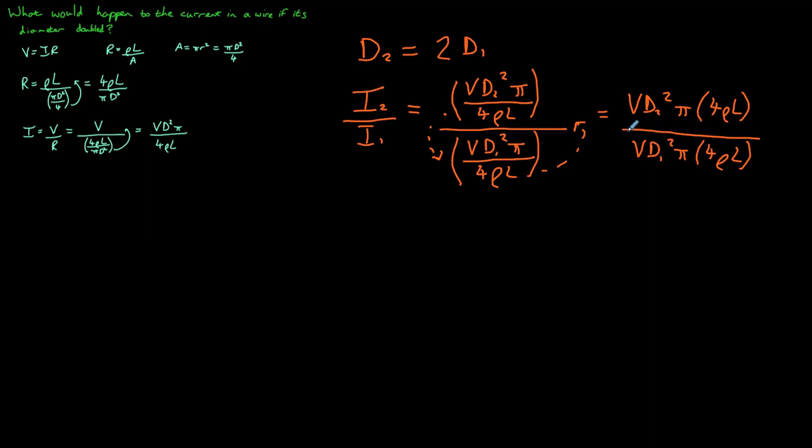So all we've done so far here is simply divide I2 by I1 and substitute in our equations for I so that we now have an equation in terms of D, the diameter. Now you'll notice that the next step should be quite simple. We can cancel a lot of these values. V we have on the top and the bottom, so we can cancel the Vs. Pi is on the top and bottom, we can cancel those. We can also cancel the 4s, the rhos, and the Ls.